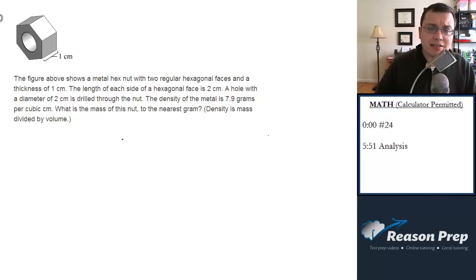The figure above shows a metal hex nut with two regular hexagonal faces and a thickness of one centimeter. The length of each side of a hexagonal face is two centimeters. A hole with a diameter of two centimeters is drilled through the nut. The density of the metal is 7.9 grams per cubic centimeter. What is the mass of this nut to the nearest gram?